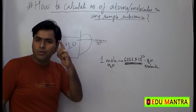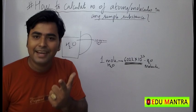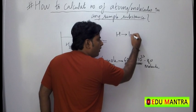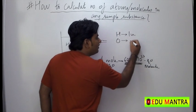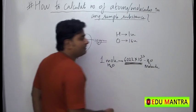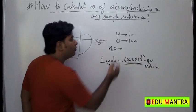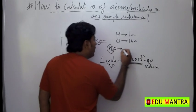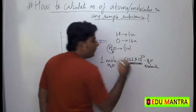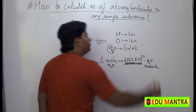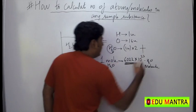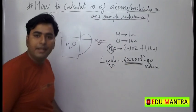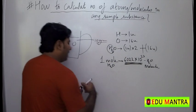What is the molecular mass of water? It is 18. How? Hydrogen has atomic mass 1 unified mass, and oxygen has atomic mass 16 unified mass. H₂O has two hydrogen atoms — so 2 × 1 = 2 unified mass — and one oxygen atom, so 16 unified mass. Adding them: 18 unified mass. So one molecule of water weighs 18 unified mass.